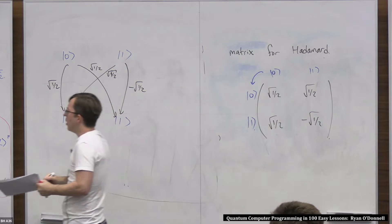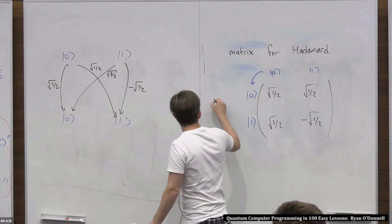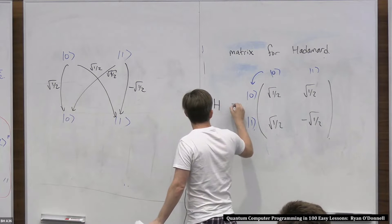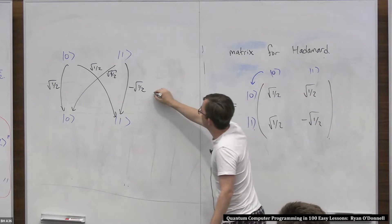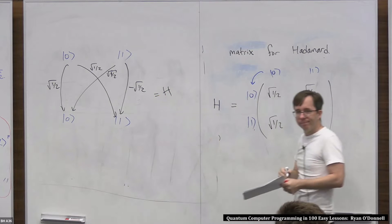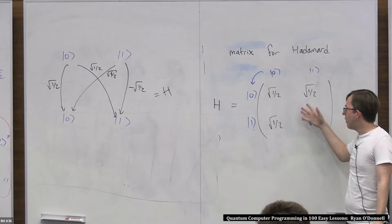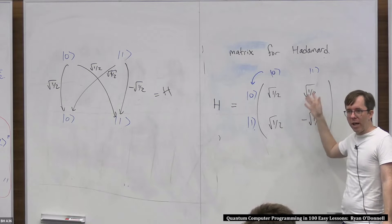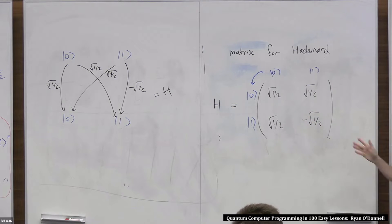The assembly-language shorthand for Hadamard is just H. So we say instruction H is this matrix, or equivalently this paths diagram. Mathematicians had already studied this particular matrix — maybe without the root-halves, but with the plus, plus, plus, minus pattern. Jacques Hadamard studied this matrix, and that's why it's called the Hadamard instruction.